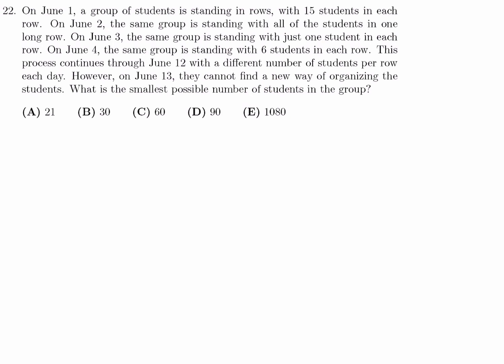On June 1, a group of students is standing in rows with 15 students in each row. On June 2, the same group is standing with all of the students in a long row. On June 3, the group is standing with just one student in each row. On June 4, the same group is standing with six students in each row. This process continues through June 12, with a different number of students per row each day. However, on June 13, they cannot find a new way of organizing the students. What is the smallest possible number of students in this group?